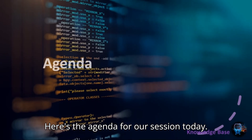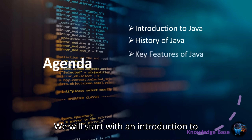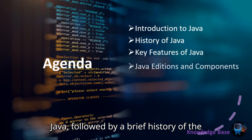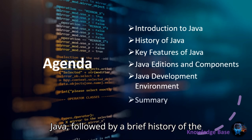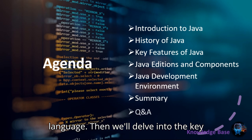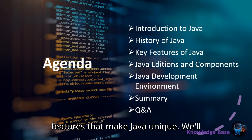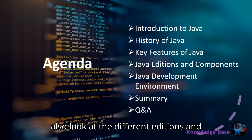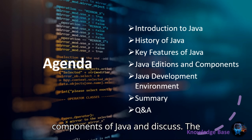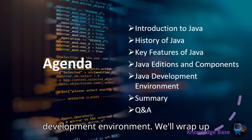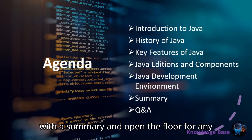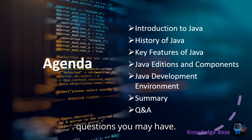Here's the agenda for our session today. We'll start with an introduction to Java, followed by a brief history of the language. Then we'll delve into the key features that make Java unique. We'll also look at the different editions and components of Java, discuss the development environment, and wrap up with a summary and Q&A.